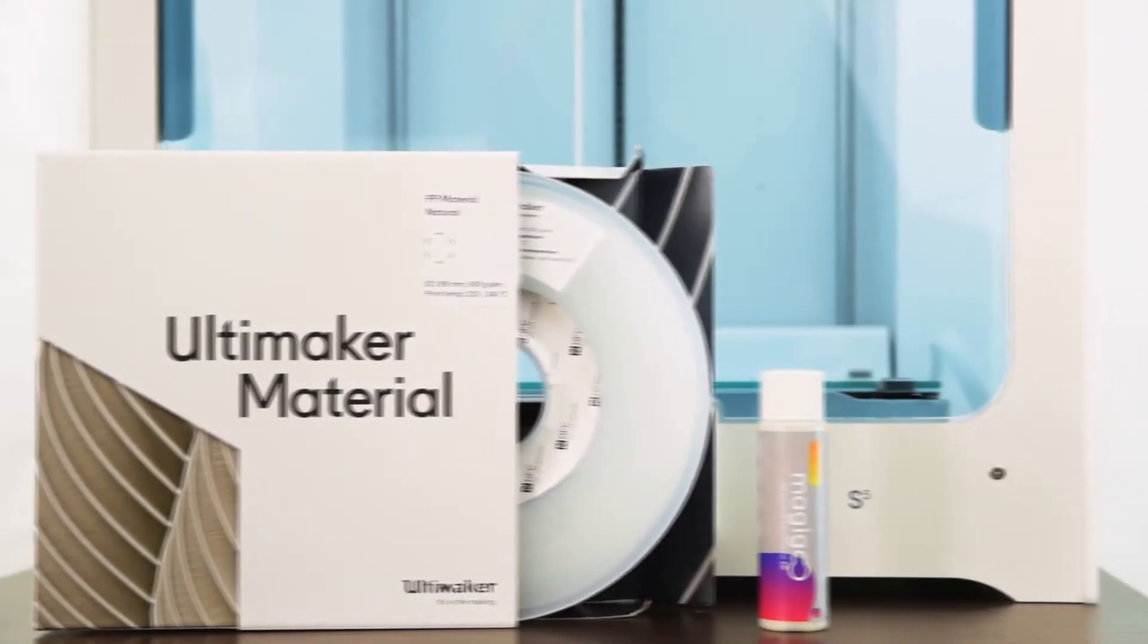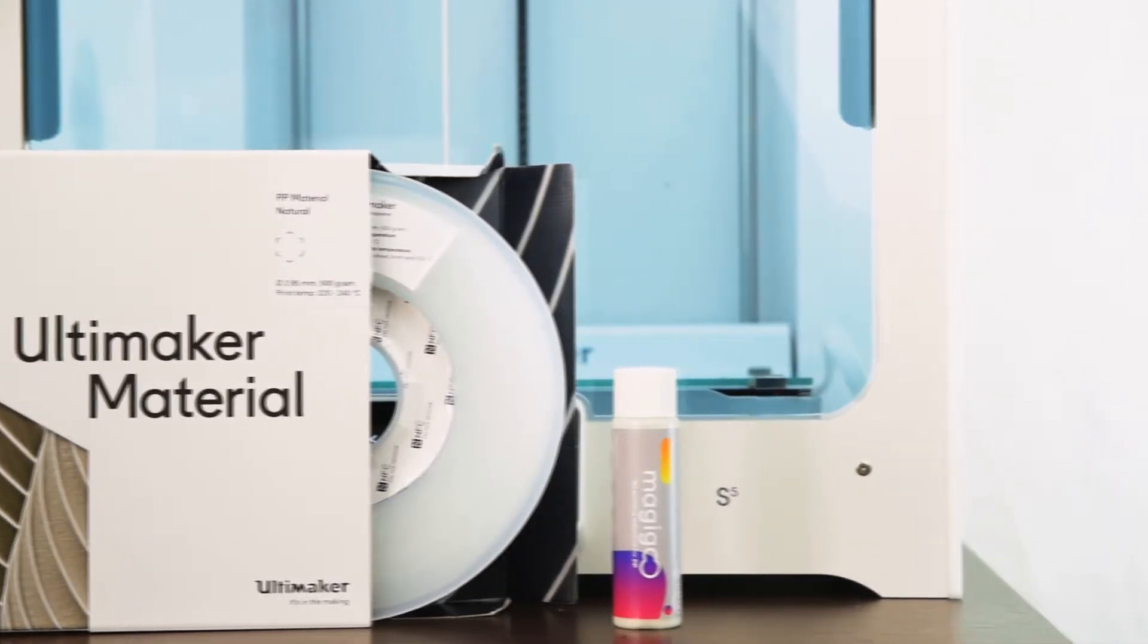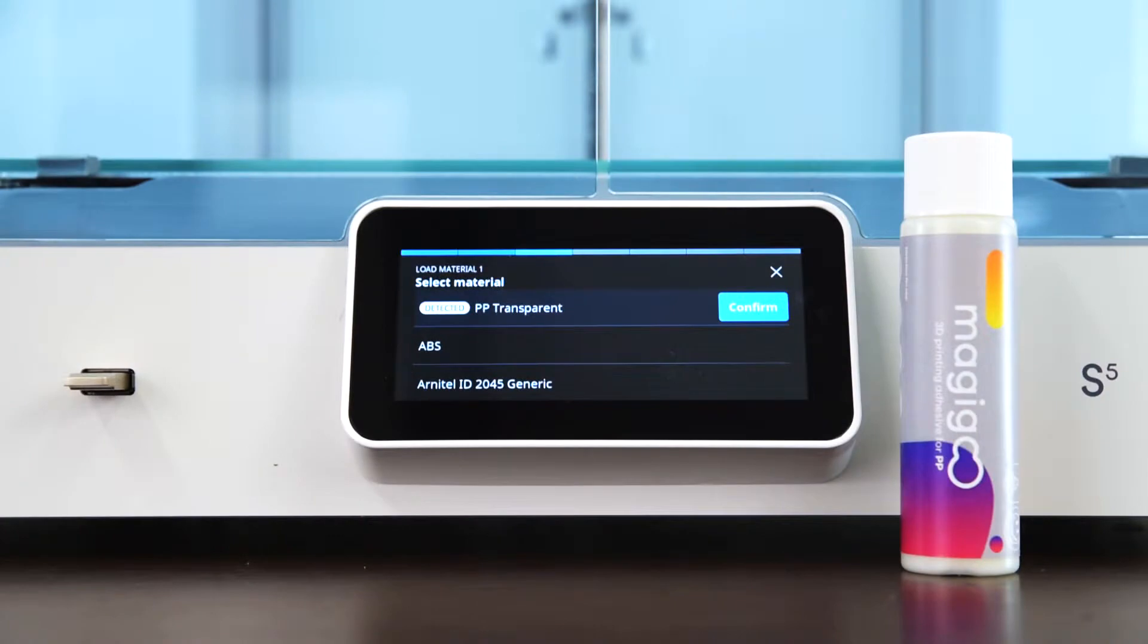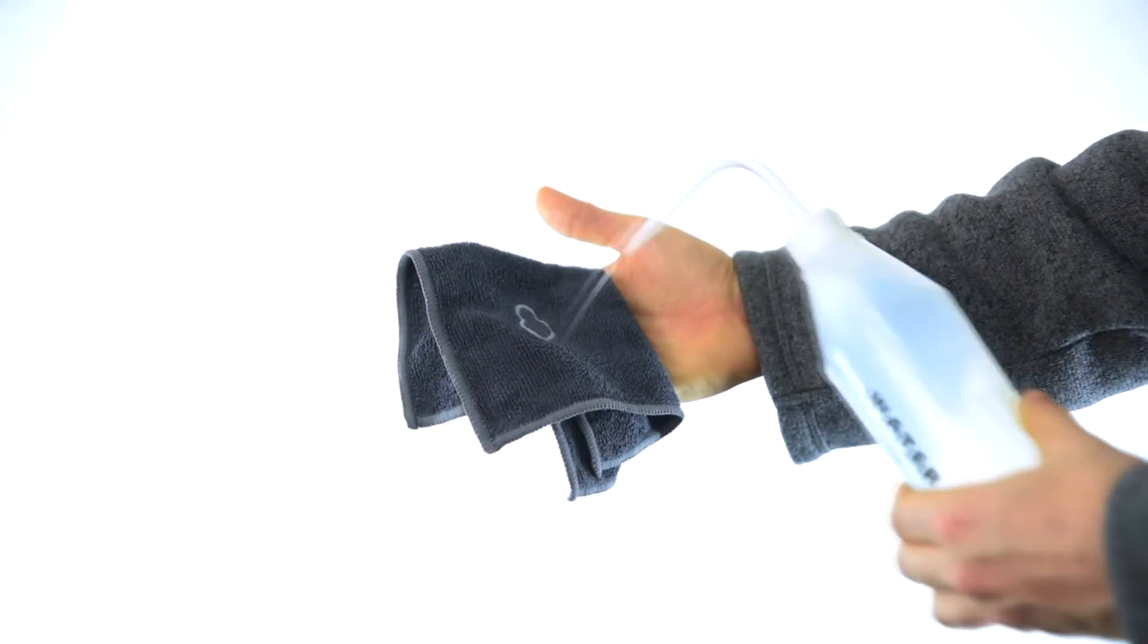Set up your 3D printer for printing with polypropylene or glass-filled polypropylene filament. Before applying new Magigoo, lightly wet a cloth with water and clean your 3D printing surface well.